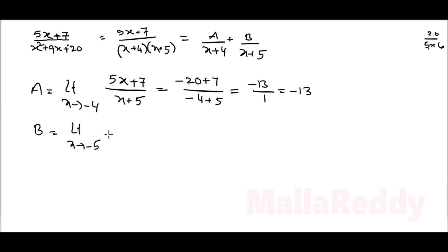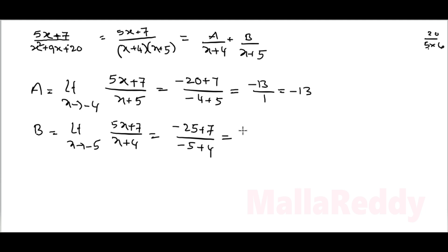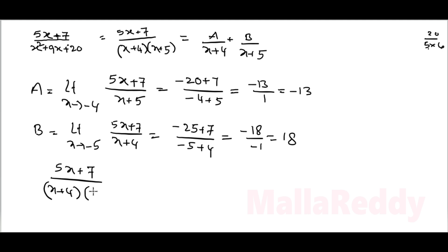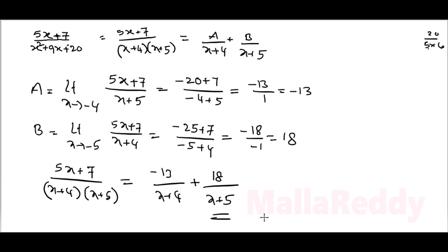B is equal to limit x tends to minus 5: (5x+7) by (x+4) gives 5 times minus 5 plus 7 by minus 5 plus 4, that is minus 25 plus 7 equals minus 18 by minus 1 equals 18. Therefore (5x+7) by (x+4)(x+5) equals minus 13 by (x+4) plus 18 by (x+5). That is the answer.